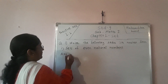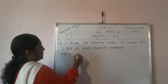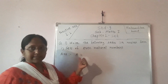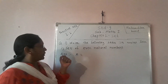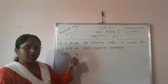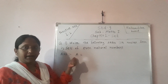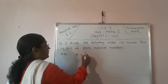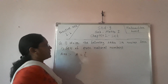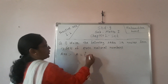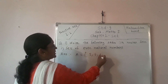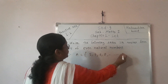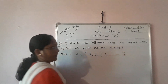Answer: I represent that set by capital letter A. Even natural numbers — we know that they are 2, 4, 6, 8, and so on to infinity.